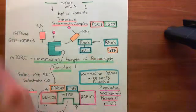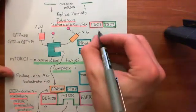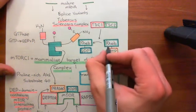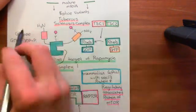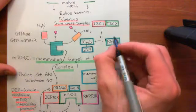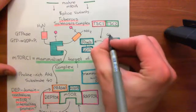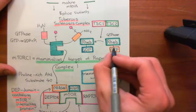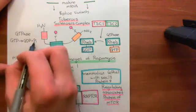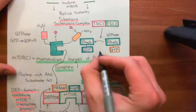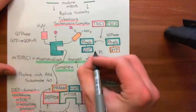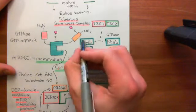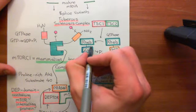All you need to do in order to turn the RHEB G protein off is to activate RHEB's intrinsic GTPase activity, and it will turn itself off. This is what the tuberous sclerosis complex does — it activates the RHEB monomeric G protein to inactivate itself. RHEB then breaks down GTP into GDP and inorganic phosphate, and the GDP remains bound while the inorganic phosphate goes into the cytoplasm.